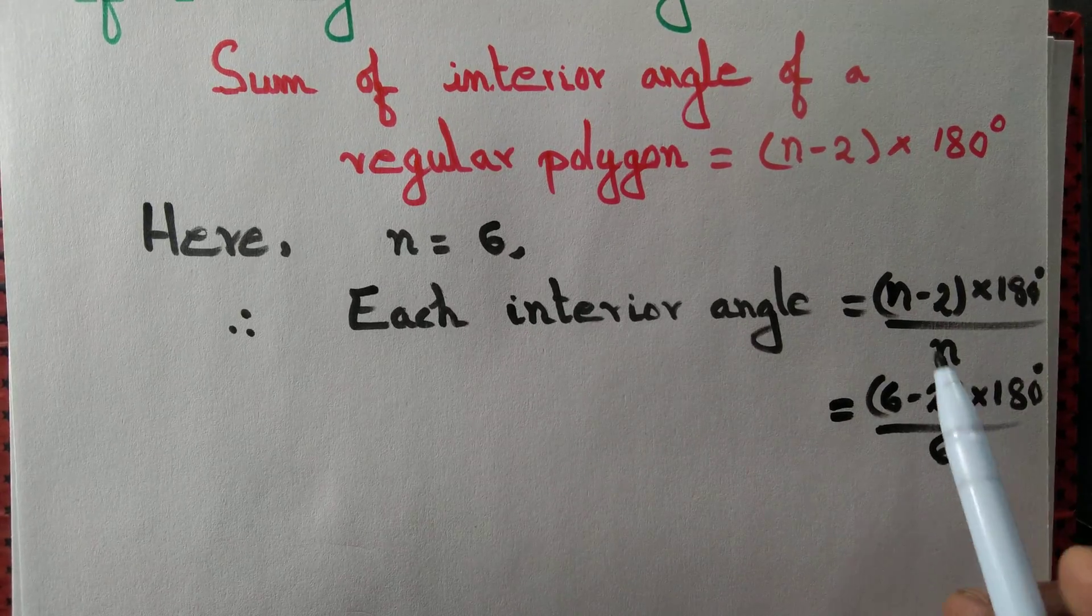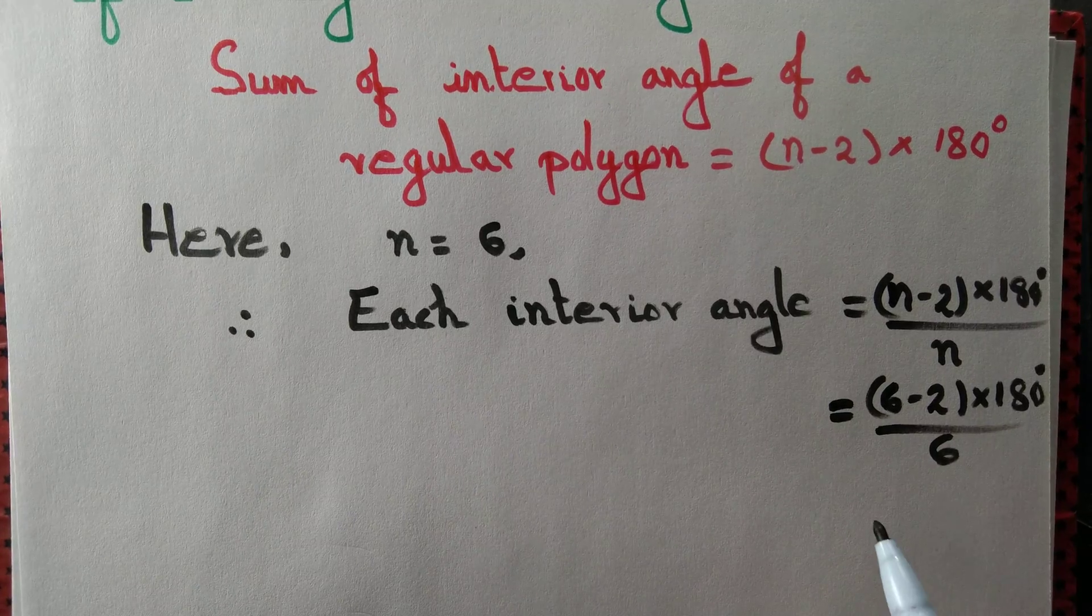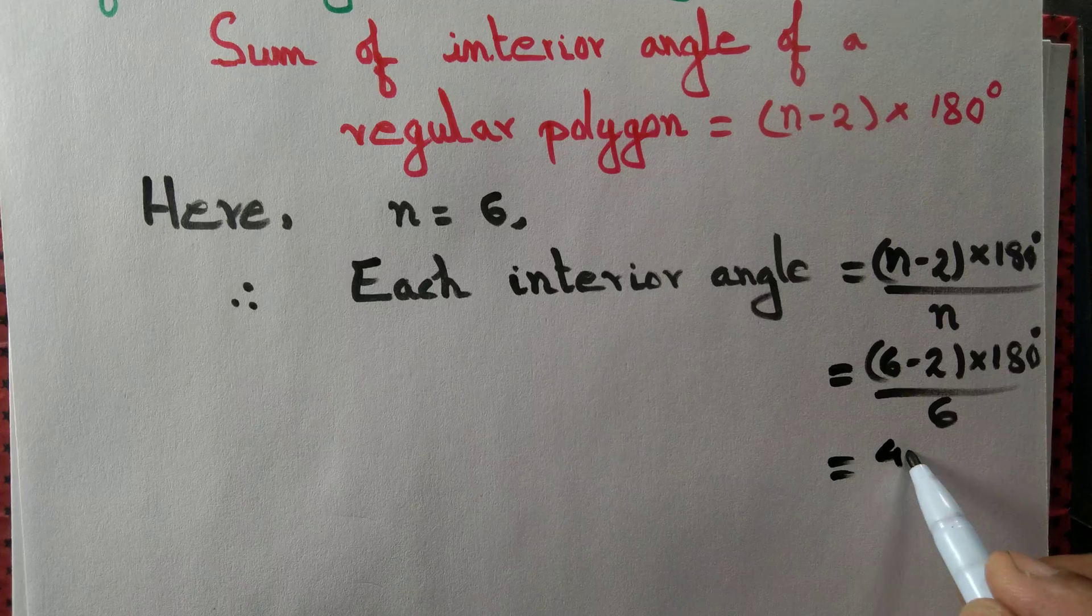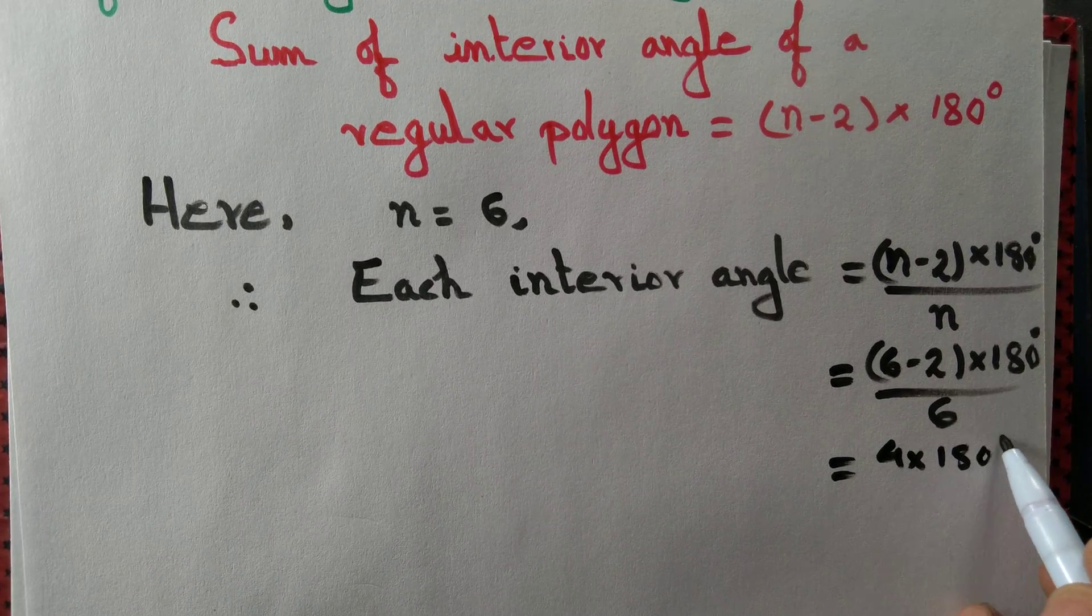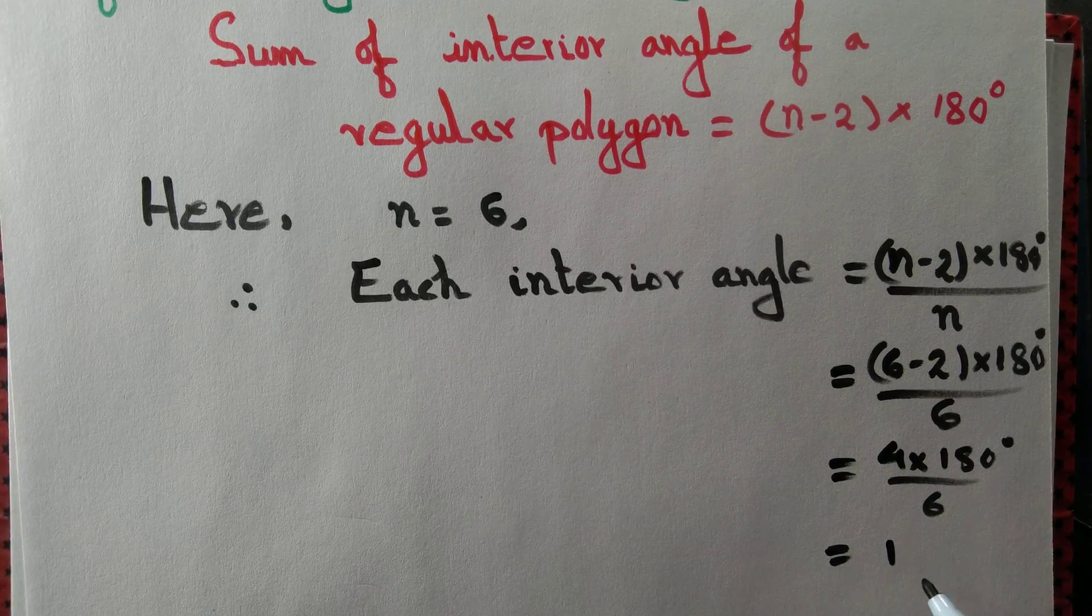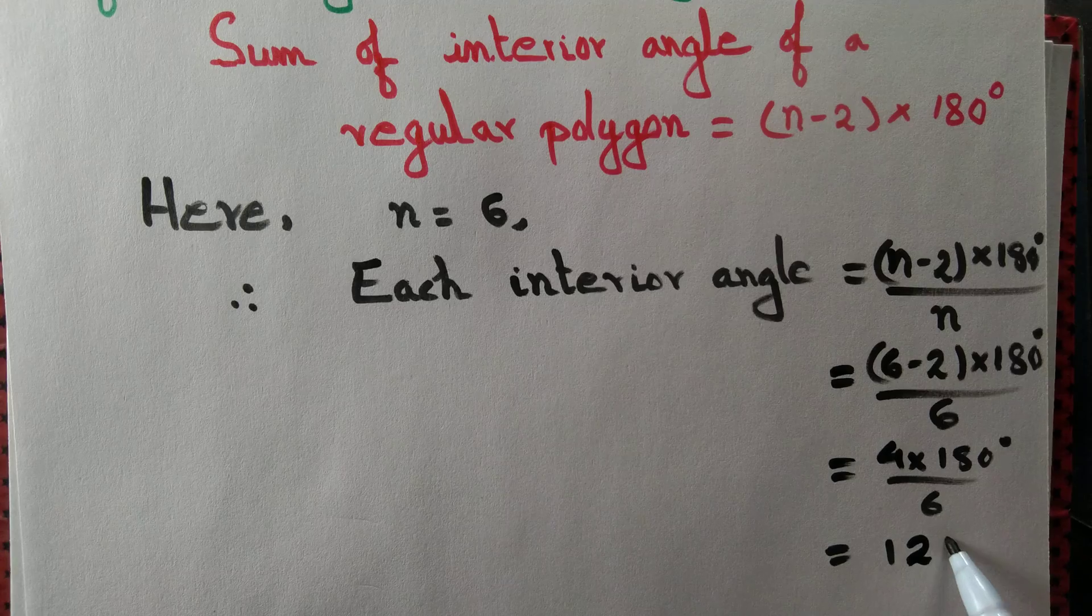Here, n equals 6. So 6 minus 2 is 4, and we can cancel out, and we have each interior angle equal to 120 degrees. In other words, one interior angle of a regular hexagon measures 120 degrees.